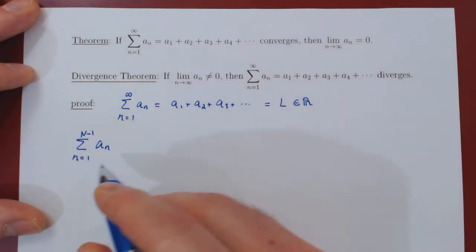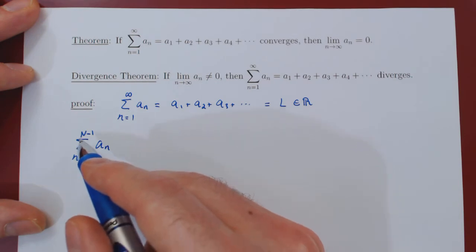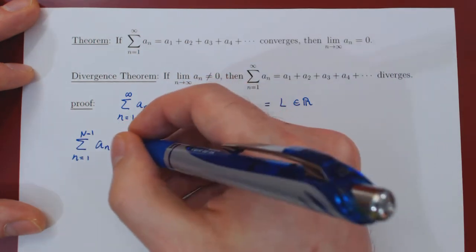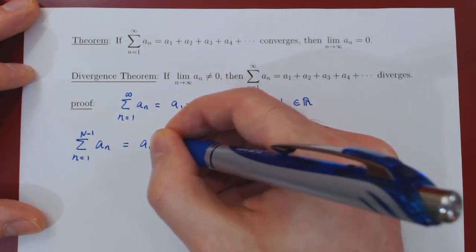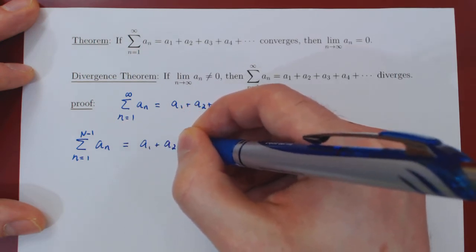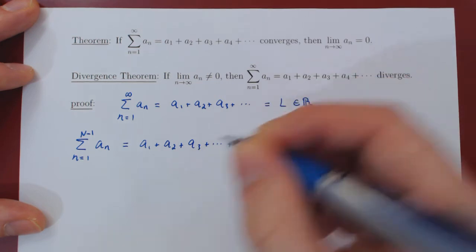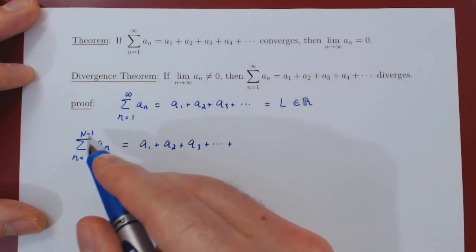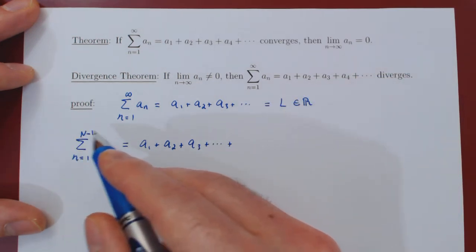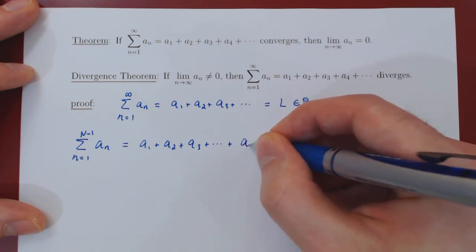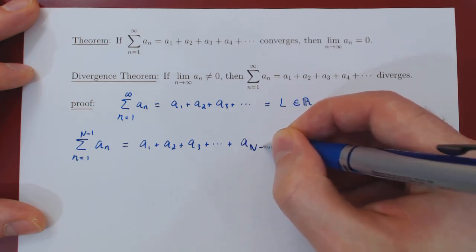So let us first sum a_n from 1 to uppercase N minus 1. So this will be a_1 plus a_2 plus a_3, all the way up to the final term when n is uppercase N minus 1. So a sub uppercase N minus 1. And again,